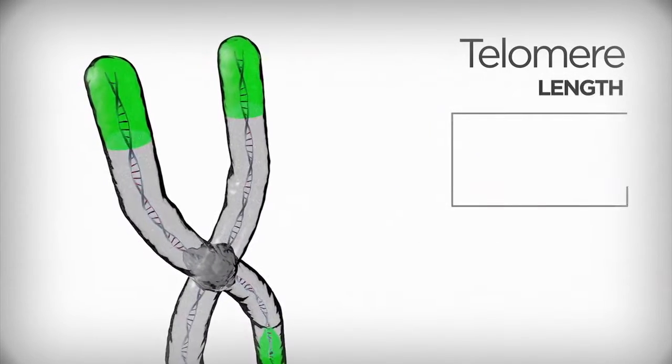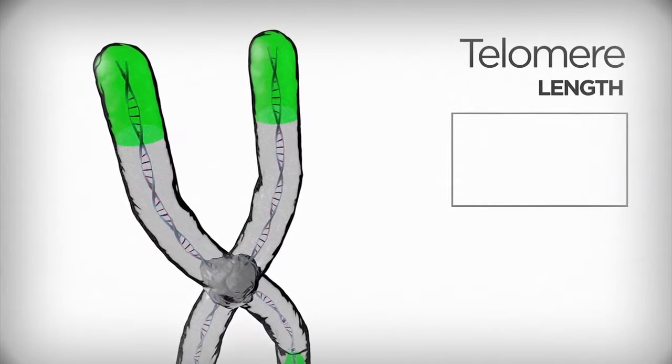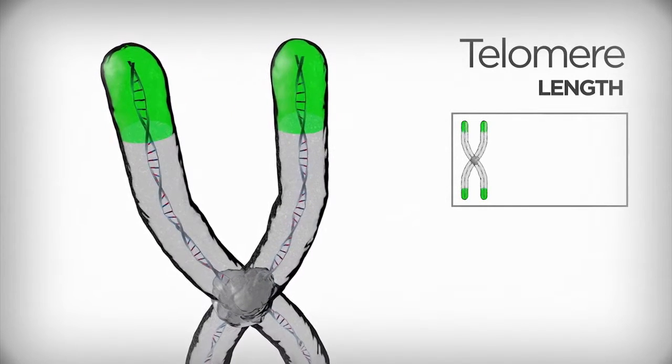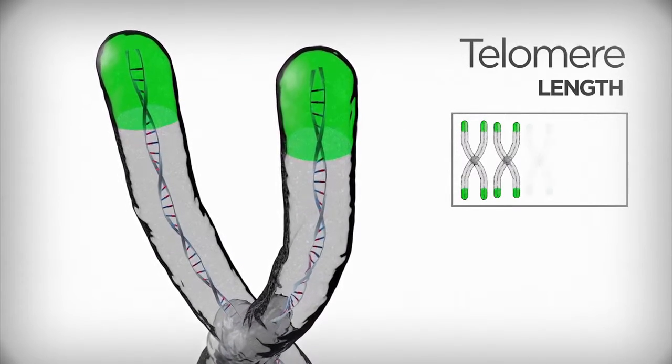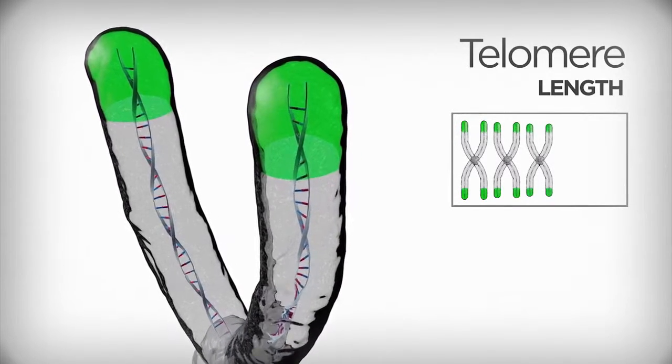Every time our cells divide, as they do around the clock, the telomeres tend to get a little shorter, which makes them an excellent indicator of chronological cellular aging and explains the functional decline of organs and tissues as we age.